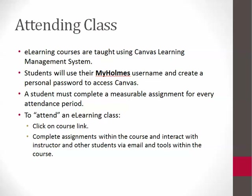You will need to log into Canvas and set your notification preferences to receive information about your course. Canvas allows you to receive notifications by email, text, or Twitter. A student must complete a measurable assignment for every attendance period. You will need to go into your course and click on Modules inside Canvas to see your course content. Do not simply go by the to-do list — the to-do list is a reminder only.